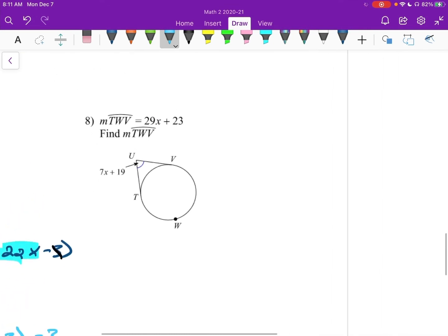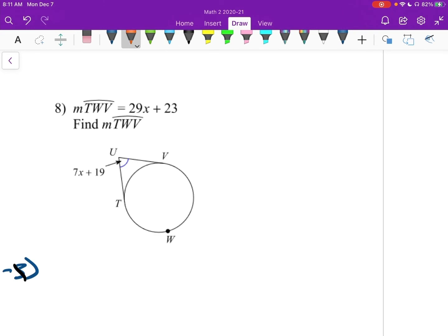All right. Last one. This is neat. TWV, TWV, this big thing, is 29X plus 23. And we're supposed to find the measure of arc TWV. Okay. Hmm. Well, we've got a tangent here and a tangent here. So we know that we could use the formula one half the big arc minus the small arc. But we don't have the small arc here. It's not written there. Hmm. We could say, well, this is going to be 360 minus the 29X plus 23. Right? Because it's one piece and the orange piece is the other piece.